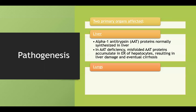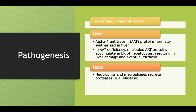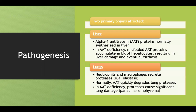In the lungs, the mechanism is a little different. There's always a balance between proteases and antiproteases in the lungs — proteases help kill off pathogens, but normally if they reach a region where they don't belong, antiproteases like alpha-1 antitrypsin degrade them and keep everything in order. In alpha-1 antitrypsin deficiency, these proteases can overwhelm the lungs and cause significant lung damage, specifically referred to as panacinar emphysema.